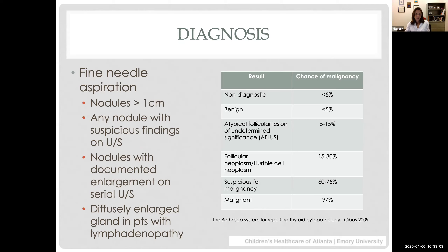In the past, FNA was not used very often in kids with the reasoning that if you have to sedate the patient for a biopsy, you might as well anesthetize them and do a lobectomy. However, the ATA guidelines are trying to encourage more use of FNA in children, because that increases the chances of doing the right surgery the first time. The Bethesda scoring criteria are used for pediatric FNA, but with slightly different chances of malignancy based on Bethesda class.